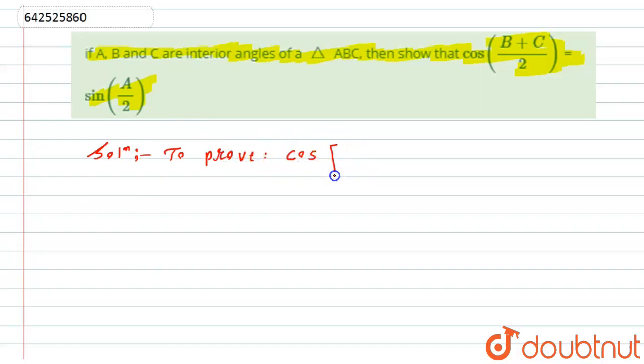We have to prove that cos((B+C)/2) equals sin(A/2). This is what we have to prove.